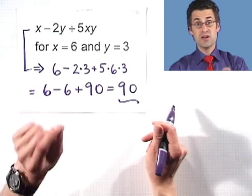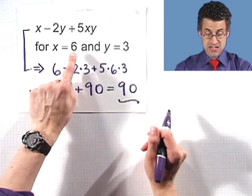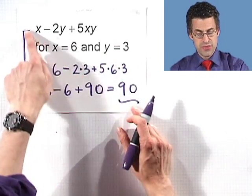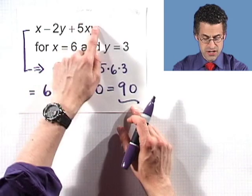So in the very special case, when x equals six and y equals three, this expression is equal to 90. Neat.